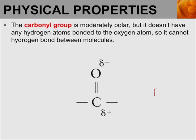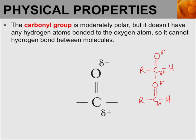For example, if we have multiple copies of an aldehyde, we know the oxygen is partially negative and the carbon is partially positive. Another aldehyde will align itself so that the partially positive end of the carbonyl group faces the partially negative end of the other carbonyl group, because opposites attract. This interaction between carbon and oxygen is a dipole-dipole interaction, or intermolecular force.